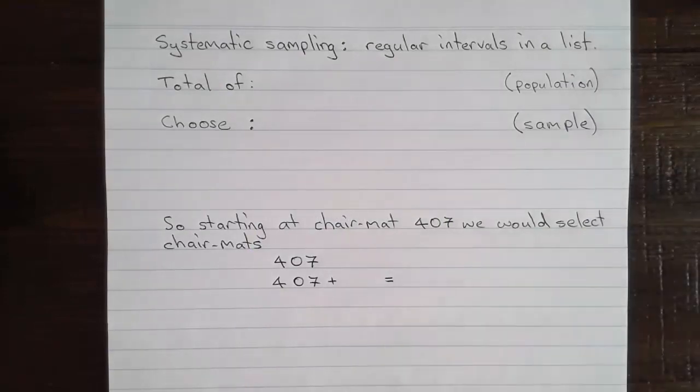Let's look at some notes that I've made from that question. The first thing we need to realize is that the question is asking us about systematic sampling. Systematic sampling is where we choose a sample by taking regular intervals from a list of numbers, values or items.